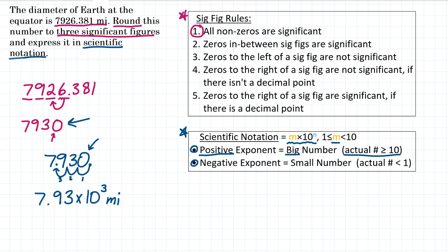All right, so for the diameter of Earth at the equator rounded to three significant figures and expressed in scientific notation, we get 7.93 times 10 to the 3rd miles.